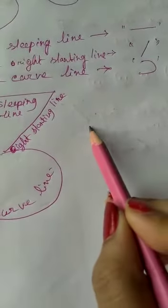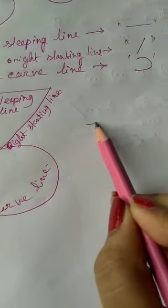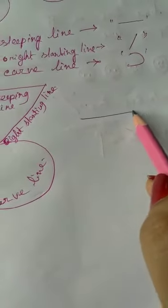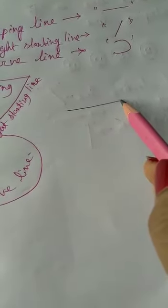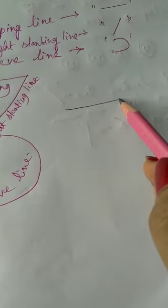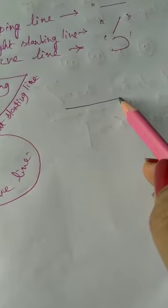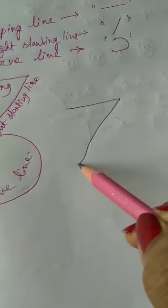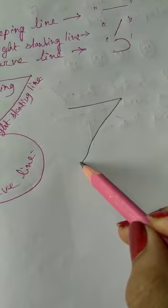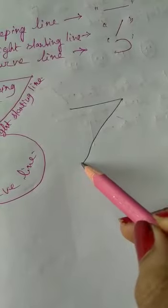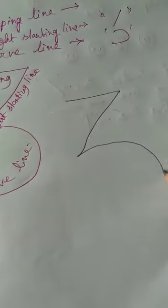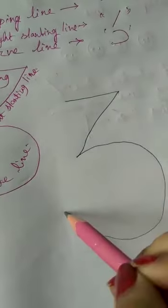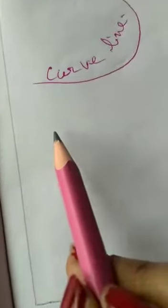First a slipping line. Then from the end of the slipping line start a right slanting line. From the end of the right slanting line start a curved line. It makes the number 3.